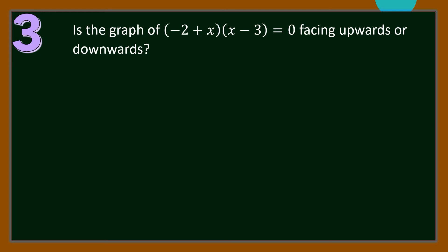Number 3: Is the graph of negative 2 plus x times x minus 3 equals 0 facing upwards or downwards? If we multiply the two binomials on the left-hand side of the equation, we will get x squared minus 5x plus 6 equals 0. Hence, we have a quadratic equation where the leading term is positive. If the leading term is positive, then the graph representing the quadratic function is facing upwards.